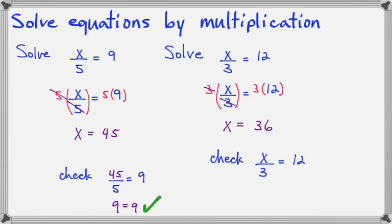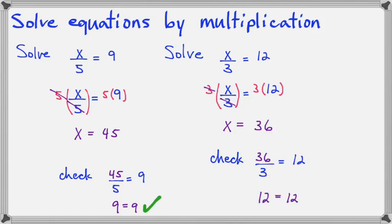Let's check it out. If x divided by 3 equals 12, and I substitute 36 in there, does 36 divided by 3 equal 12? Yes, it does. So that check is good, and 36 really is the right solution here.